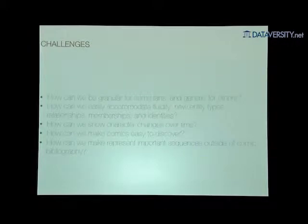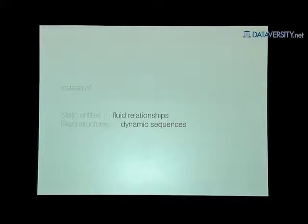So to recap: how do we create new aggregation structures and aggregate characters where it's important, but also present granular views to users who care about that? How can we accommodate fluidity — new entity types, new relationships, sequences, memberships — and model on shifting sands? Instead of static entities, we need to represent fluid relationships. Instead of fixed structures, we need dynamic sequences without having to recode entire applications or entire database schemas. This is why the graph is a very compelling and powerful conceptual framework for Marvel as a company.